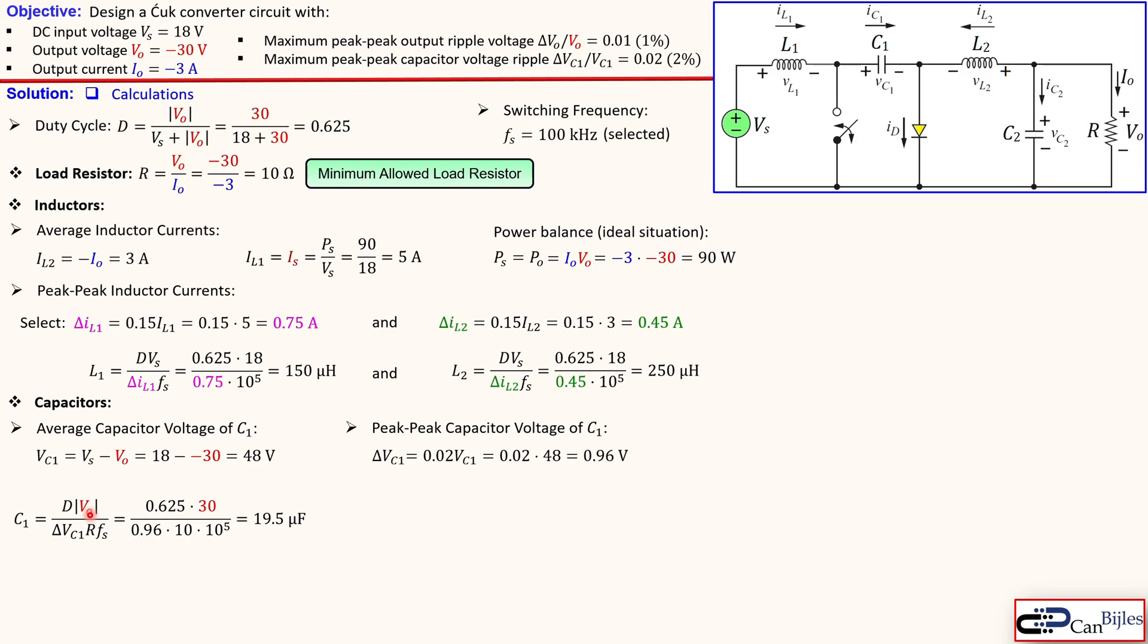And C2 can be calculated using the peak-to-peak output ripple and also the duty cycle and also what we need for our inductor L2 and again switching frequency. So we use this formula, you substitute the values, you get here 1.875 microfarads.